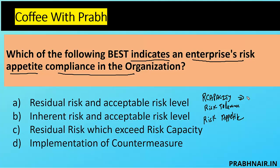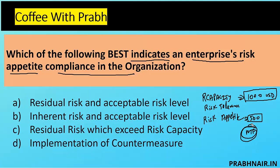For example, every month you get a salary of $1,000 — that is your risk capacity, the maximum risk you can take for the month. Risk appetite is $500 set aside for mutual funds — you've defined the particular risk for a particular initiative. But one day you find a new mutual fund and increase your investment by $50, so $50 extra is your tolerance level — that is called risk tolerance.